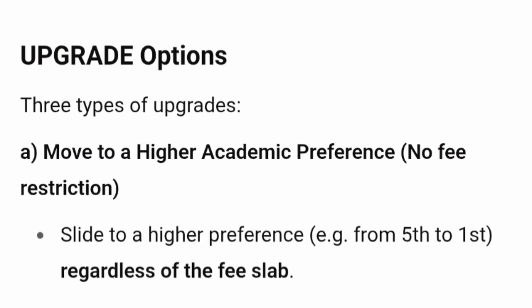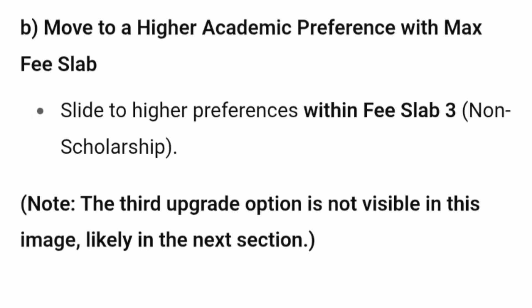There are three types of upgrade options. Type A is a move to a higher academic preference with no fee restriction — meaning you want to move from the 5th preference to the 1st preference and you are not bothered about the fee slab. Even if you move from fee slab 1 to slab 2, or slab 2 to slab 3, that is okay, because you want the higher academic preference.